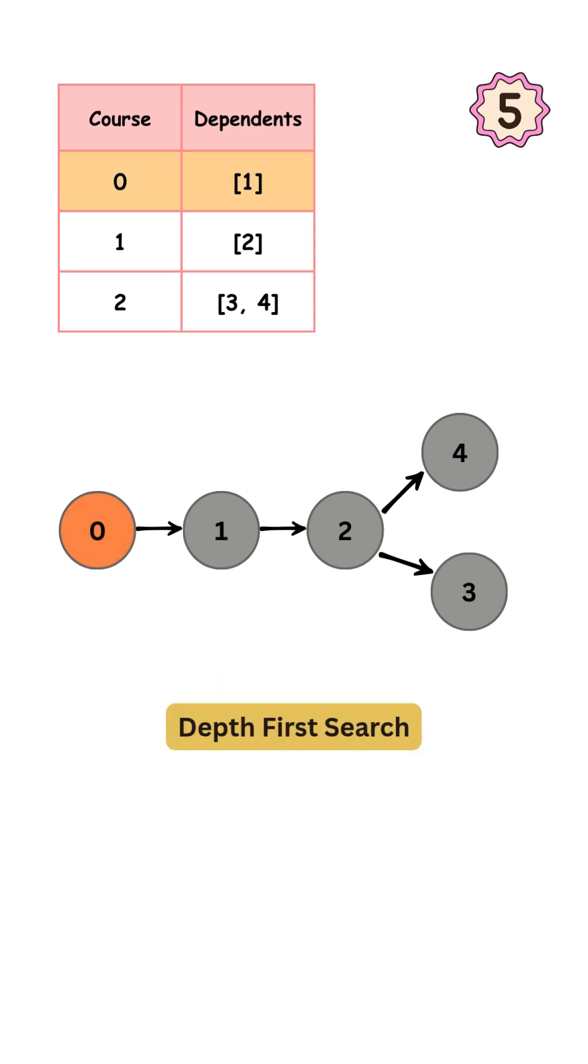We start our DFS from node 0 and mark it as discovered. From there, we move to node 1, mark that as discovered. Then to node 2 and mark that as discovered as well. From node 2, we can go to either 3 or 4. Let's go to node 4 first. Since 4 has no outgoing edges, there's nothing more to explore, we mark it as explored.